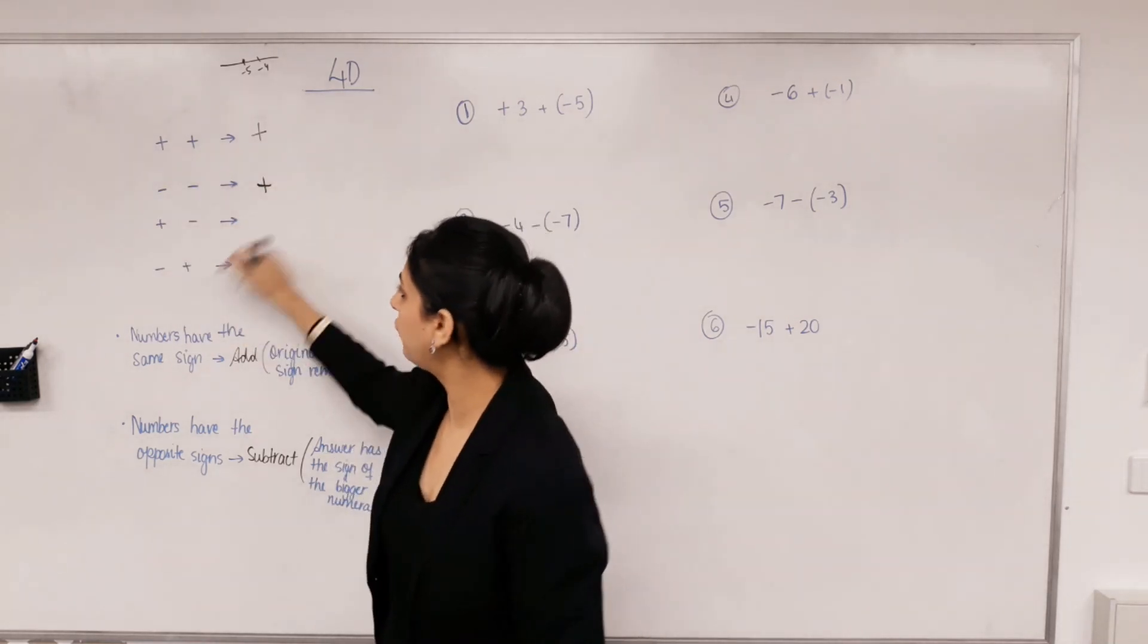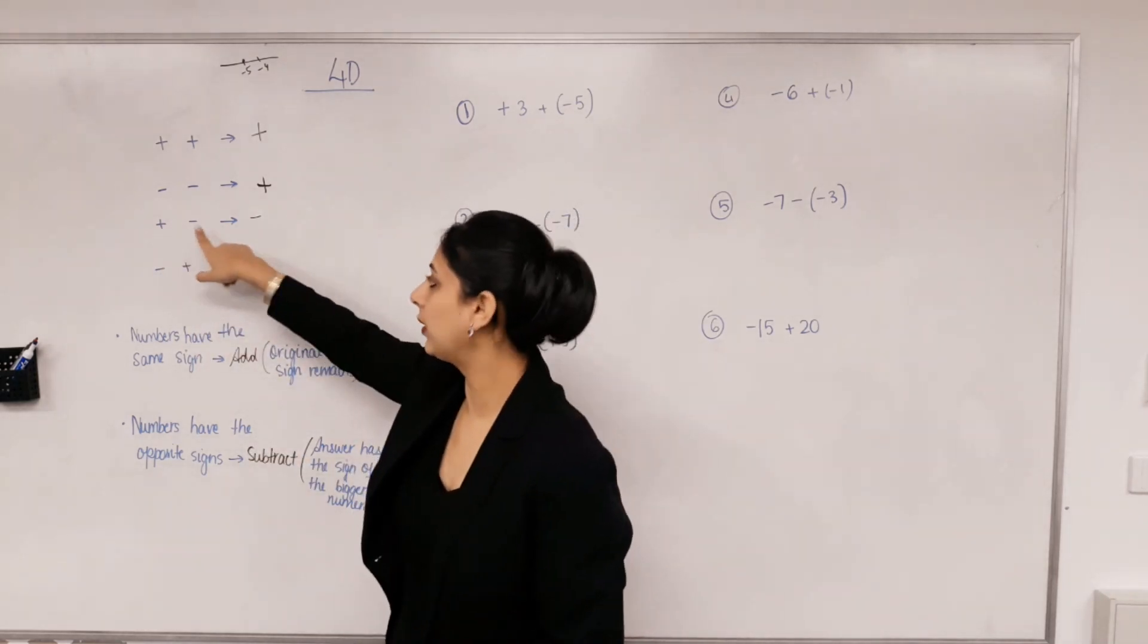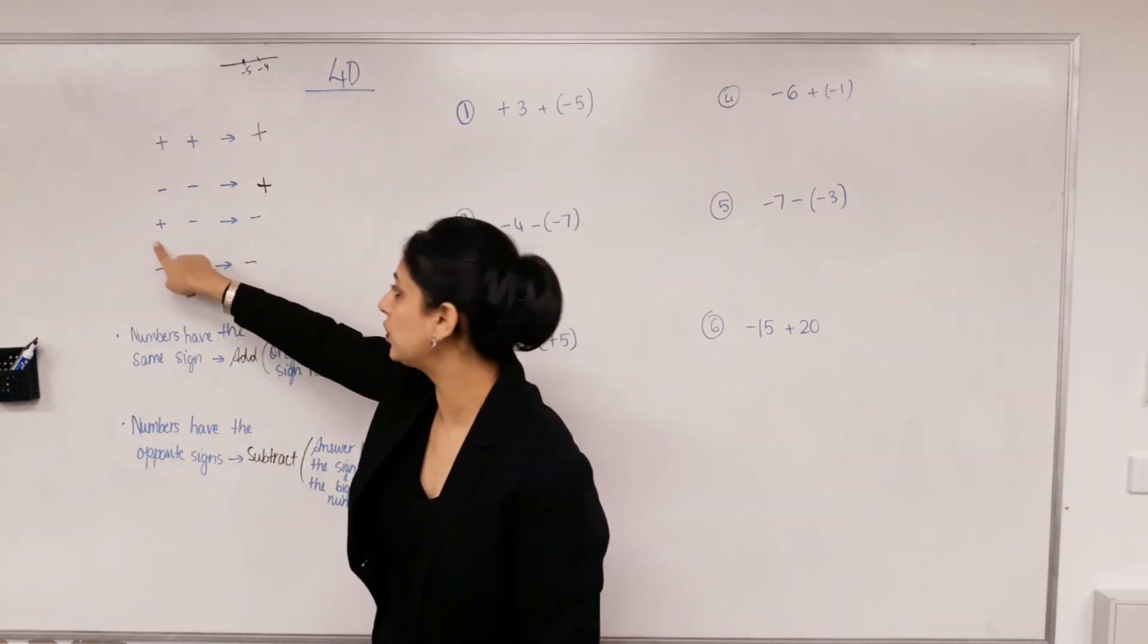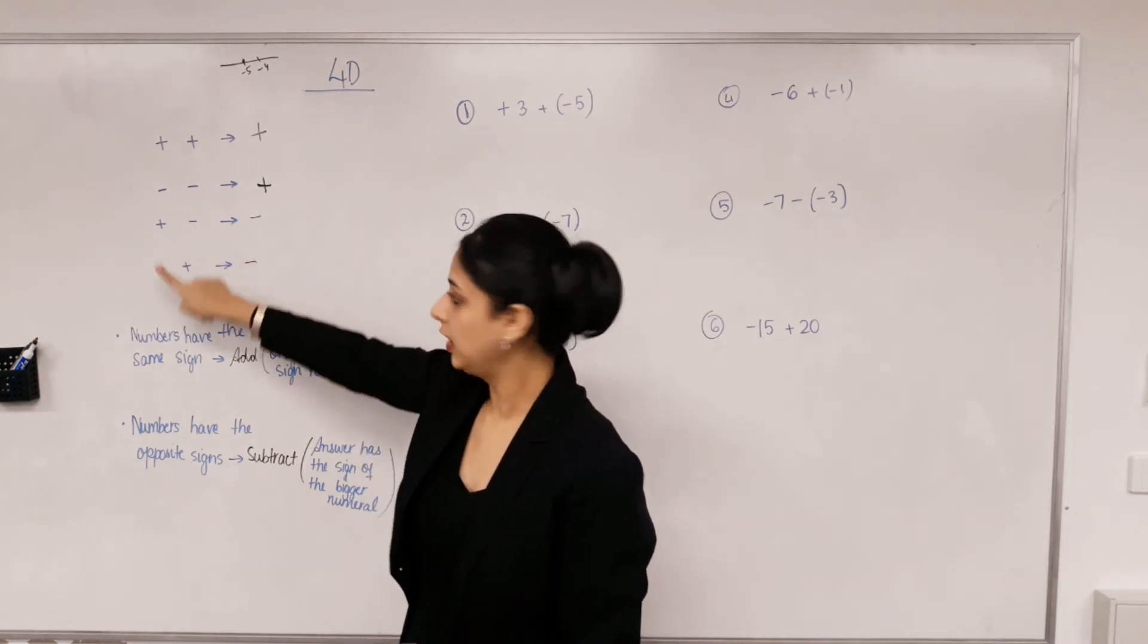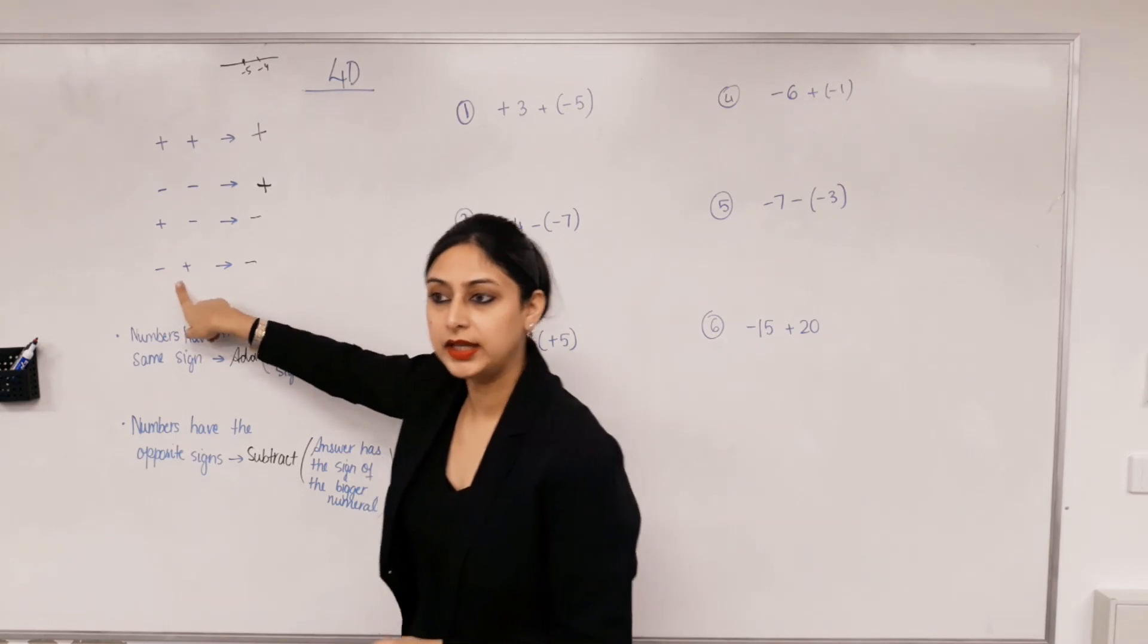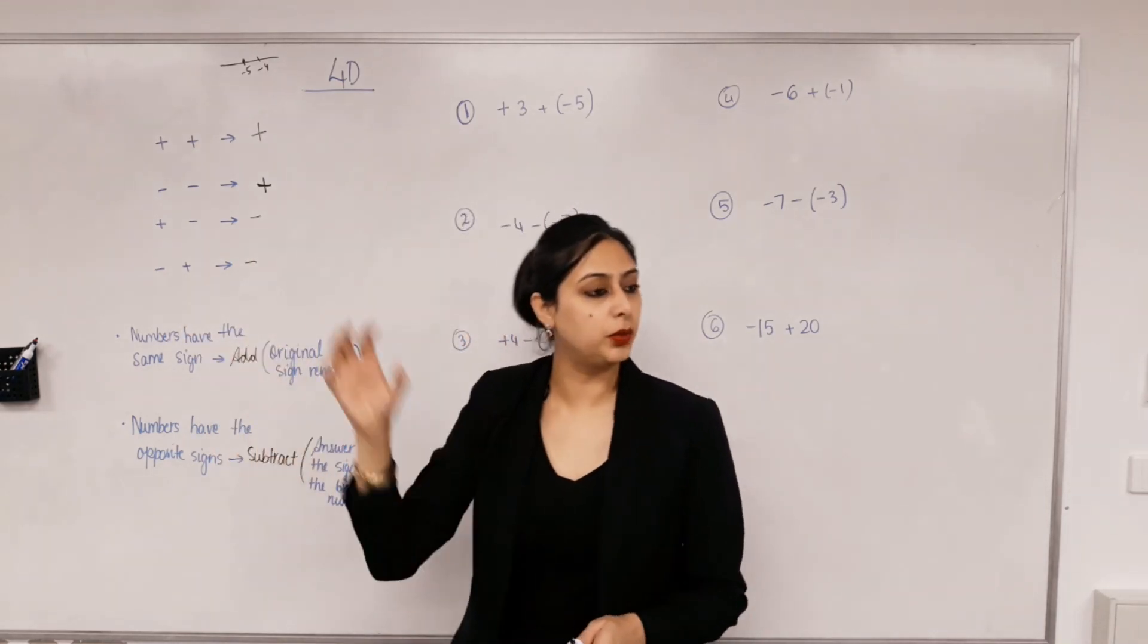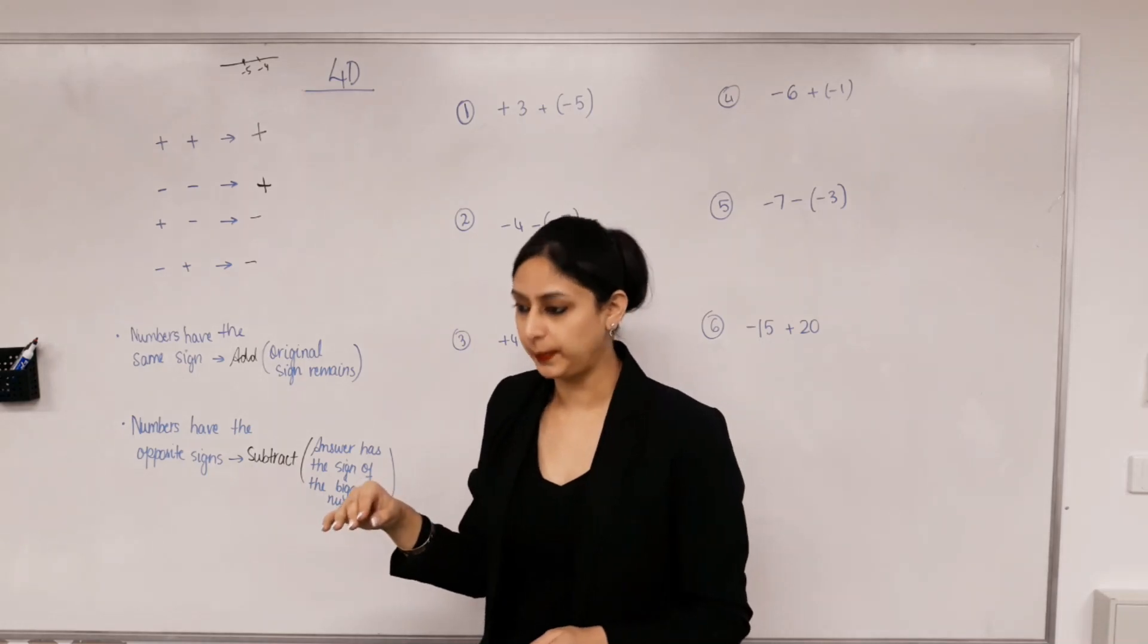If the signs are different you minus. Because you're adding a negative number. So plus says do the same as minusing. Minus says do the opposite of adding. What's the opposite of adding? Taking away. So does this make sense with what we did previous lesson?